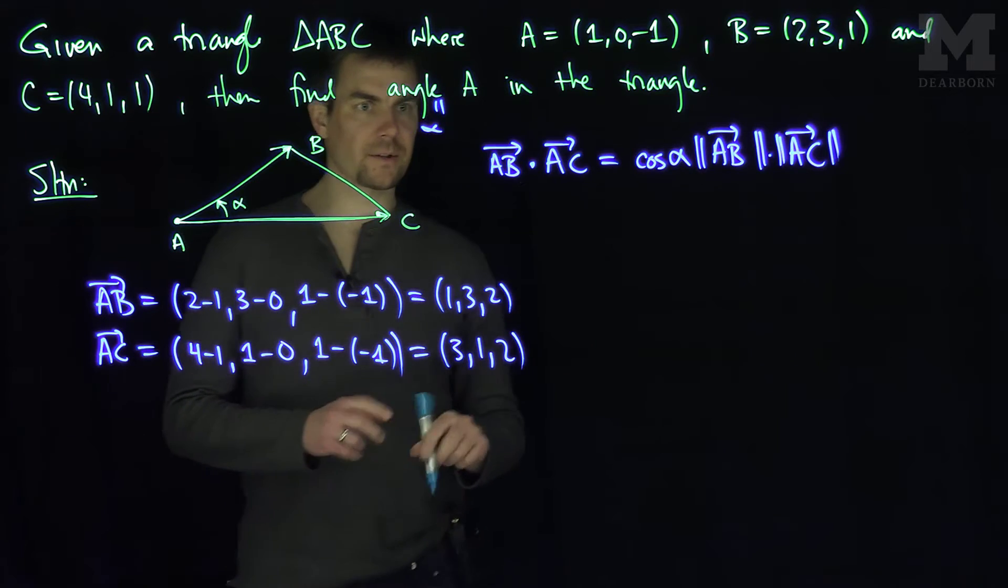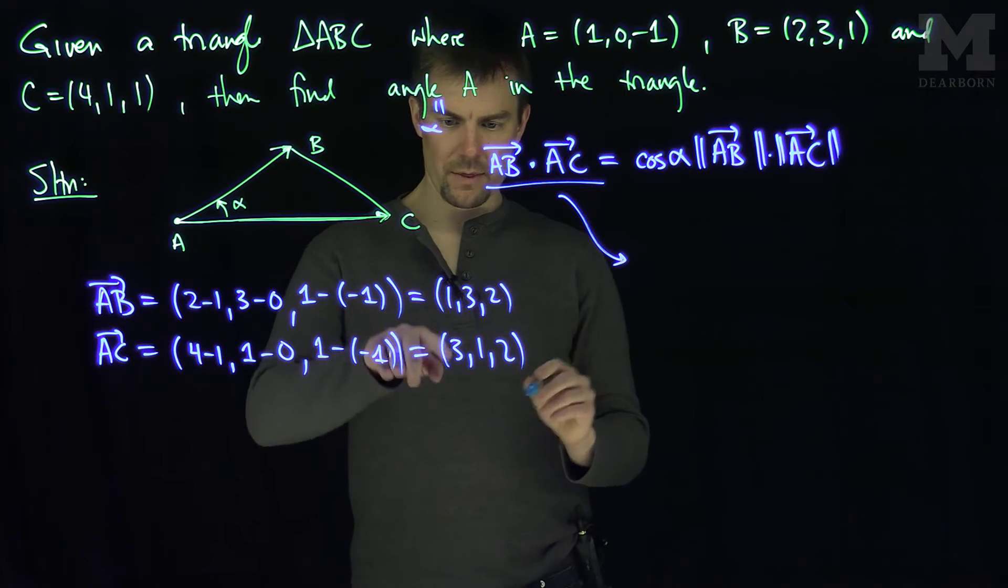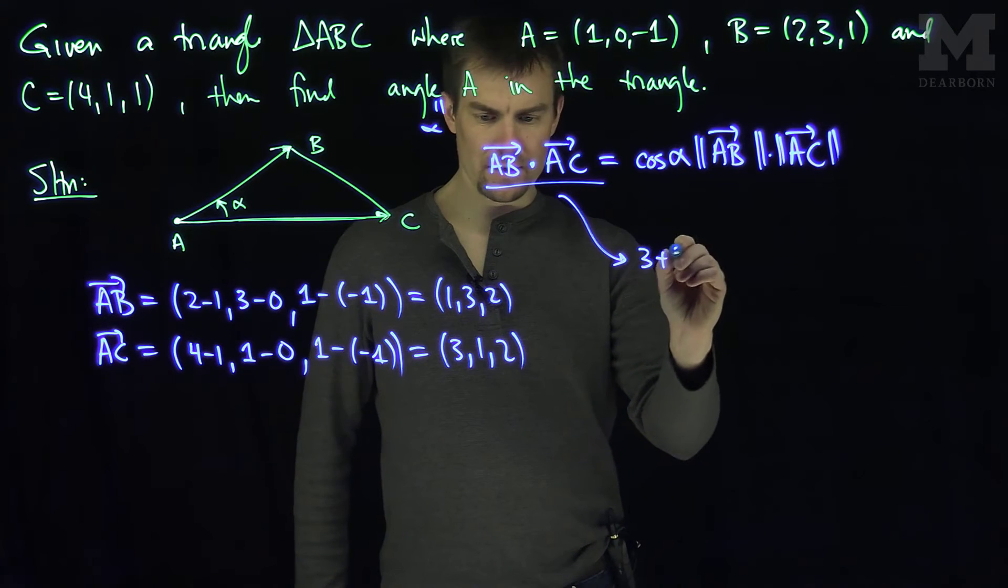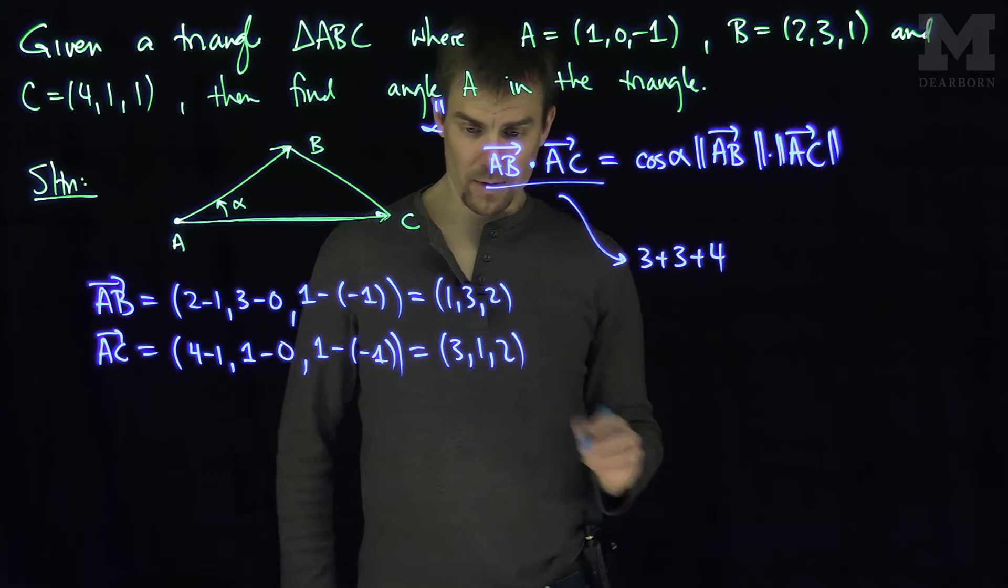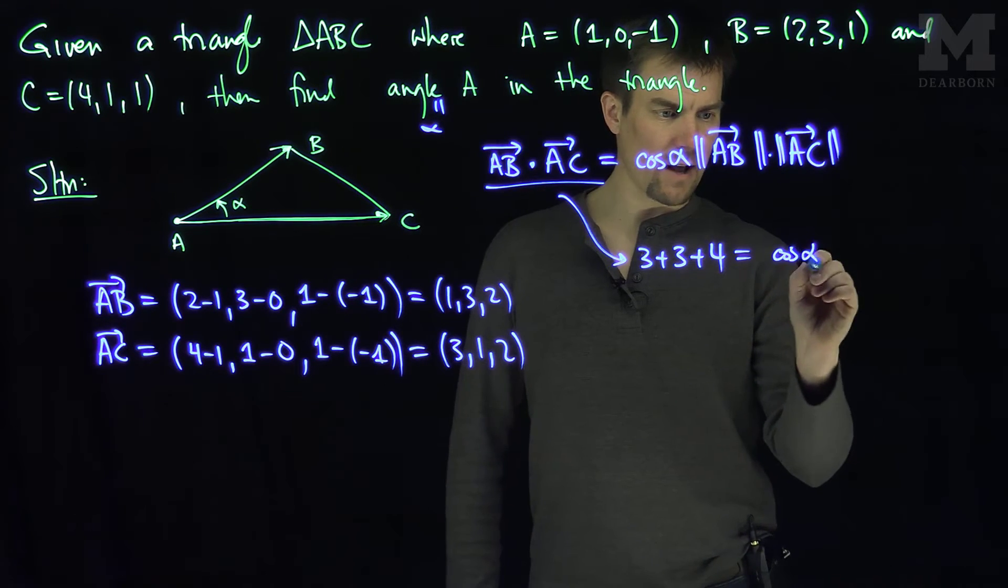So now let's do the dot product of these vectors. So the dot product AB dot AC is going to be, let's see, we'll have 3 plus 3 plus 4, because I have 1 times 3, 3 times 1, and 2 times 2, is equal to the cosine of alpha.